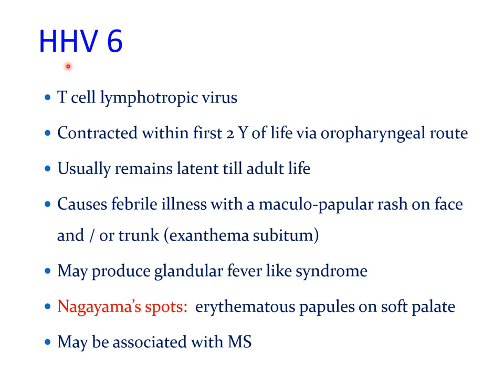Human herpes virus type 6 is a T-cell lymphotropic virus contracted within the first two years of life via the oropharyngeal route, then usually remaining latent until adult life. Reactivation may cause a febrile illness with a macular papular rash on the face or trunk and may produce a glandular fever-like syndrome. Rarely, erythematous papules on the soft palate known as Nagayama's spots may develop. HHV-6 may be associated with multiple sclerosis, a demyelinating disorder leading to sensory and motor deficits — and patients with multiple sclerosis may also develop trigeminal neuralgia.